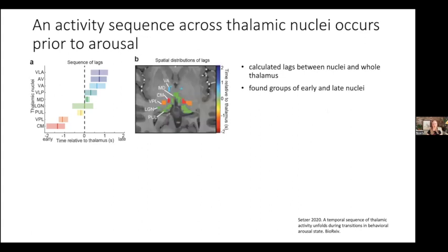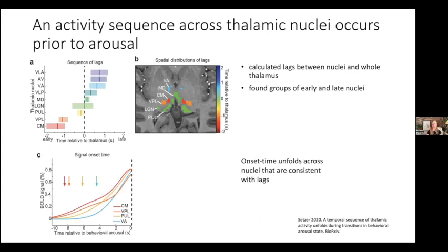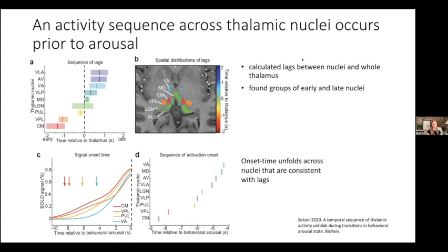Here we show functional voxels overlaid on an anatomical slice of the thalamus — anatomically distinct nuclei where you can see the sequence spreading across the thalamus. We confirmed the sequence using a second technique: fitting a hemodynamic response function to each nucleus's mean signal and determining onset time at 10% of the maximum BOLD signal. We found a very similar sequence across thalamic nuclei, with colors representing order from red (early) to purple (late), confirming that this activation sequence occurred before behavioral arousals across thalamic nuclei.